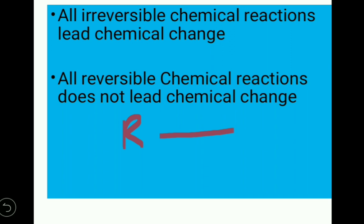What about reversible reactions? In a reversible reaction, reactants are converted into products — that is the forward reaction — and then products are converted back into reactants — that is the backward reaction. No new substances are permanently forming, and you can reverse the process. So under equilibrium conditions, there is no chemical change, even though chemical reactions are taking place. The forward reaction and backward reaction are both chemical reactions, but no chemical change occurs. Therefore, all reversible chemical reactions do not lead to chemical change.